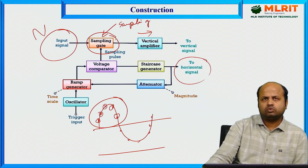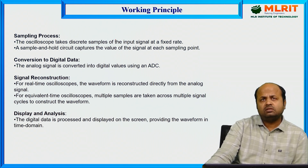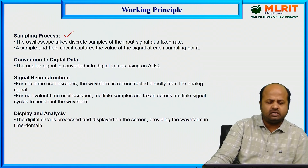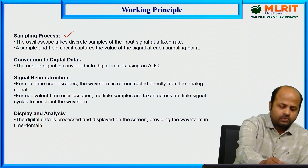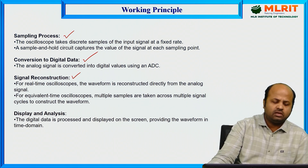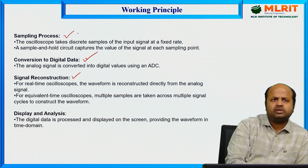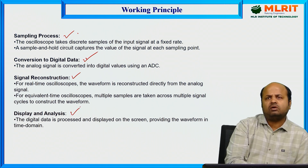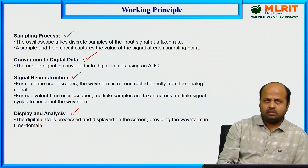Working principle of the sampling oscilloscope: the first step is the sampling process. After sampling, we convert the sampled signal to digital format. After converting to digital format, we reconstruct the signal for the display unit. Finally, we display the reconstructed signal on the display unit. These are the four major steps in the sampling oscilloscope.